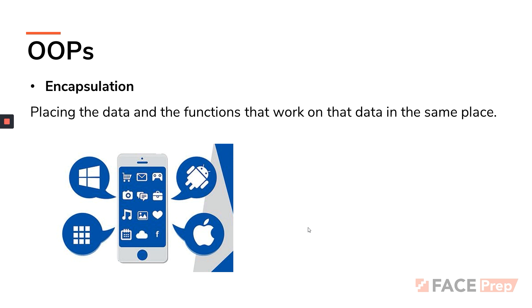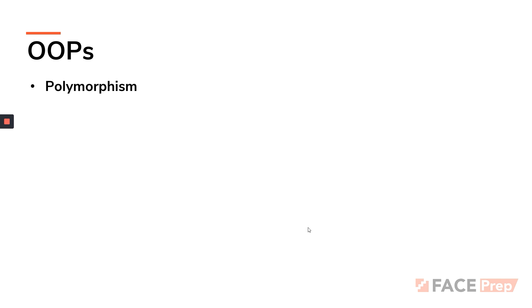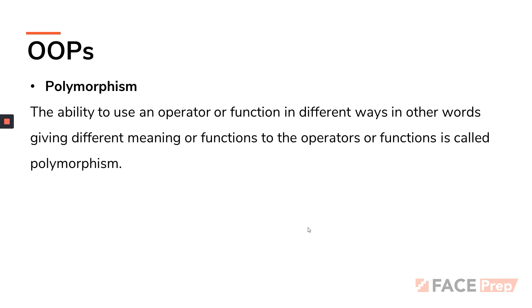Try finding such examples so you can connect to the concepts very well. Next up we have polymorphism. 'Poly' means many, 'morph' means forms — so the name itself says 'many forms.' To define it: it is the ability to use an operator or a function in different ways — giving different meanings to operators or functions is called polymorphism. If you're confused with the definition, here's a beautiful example.